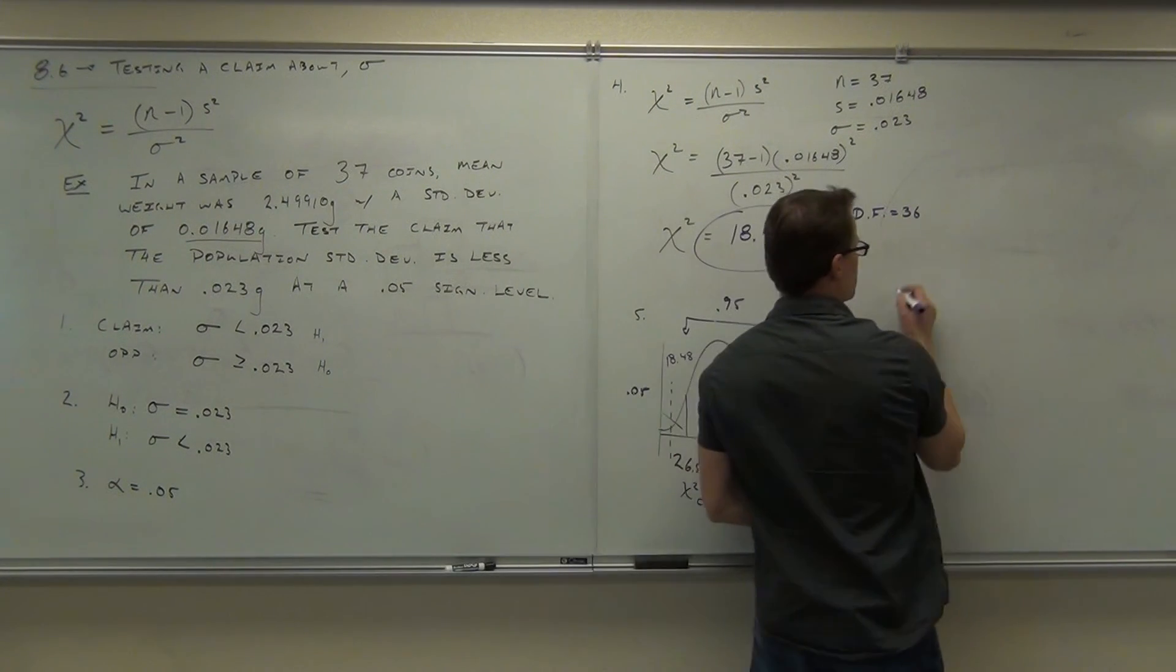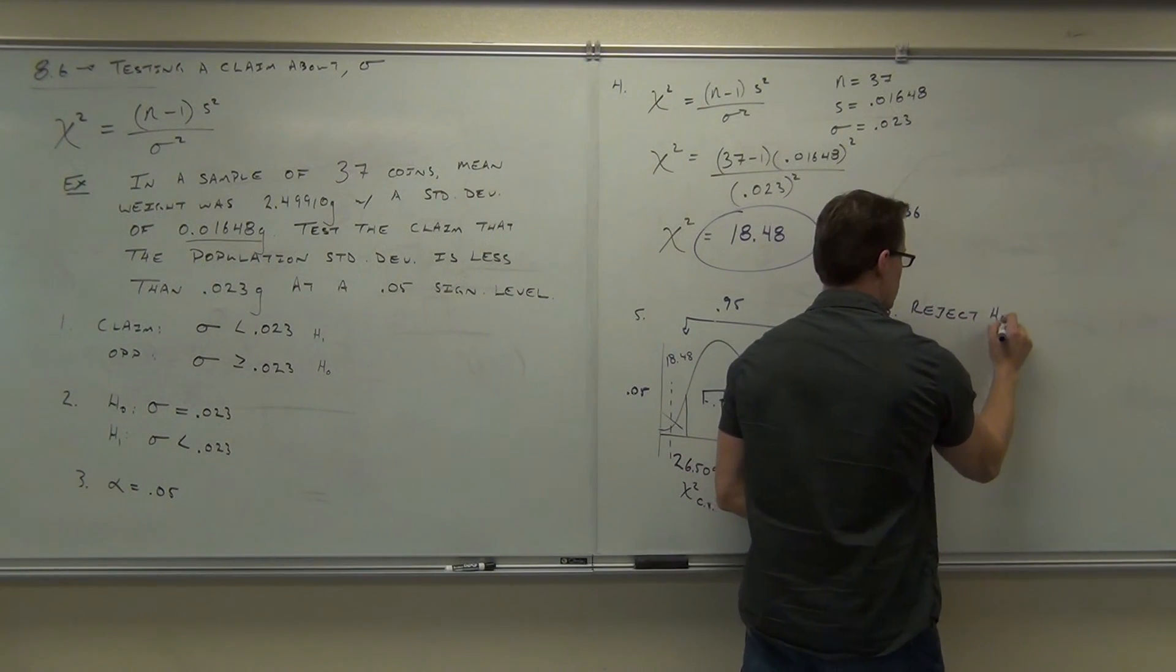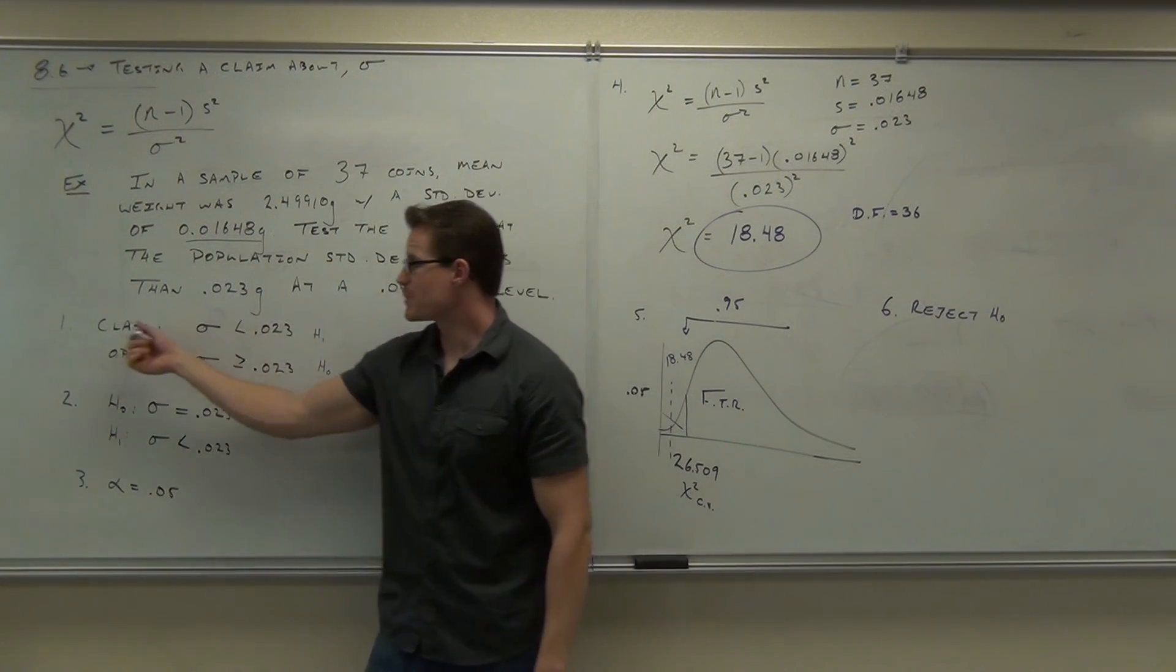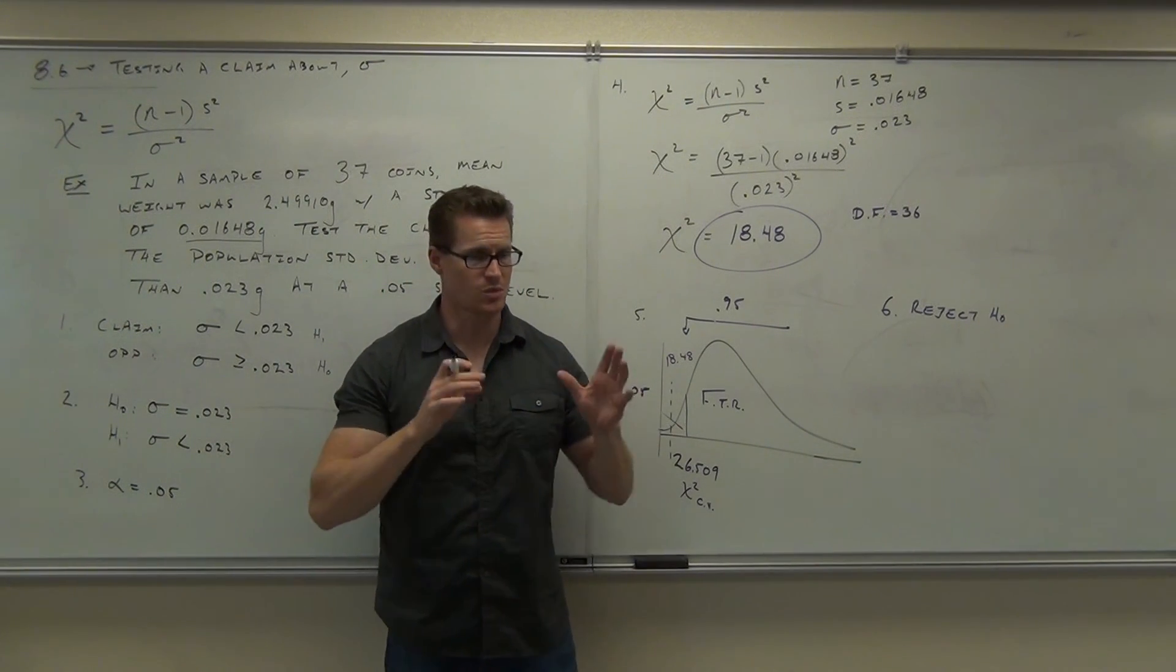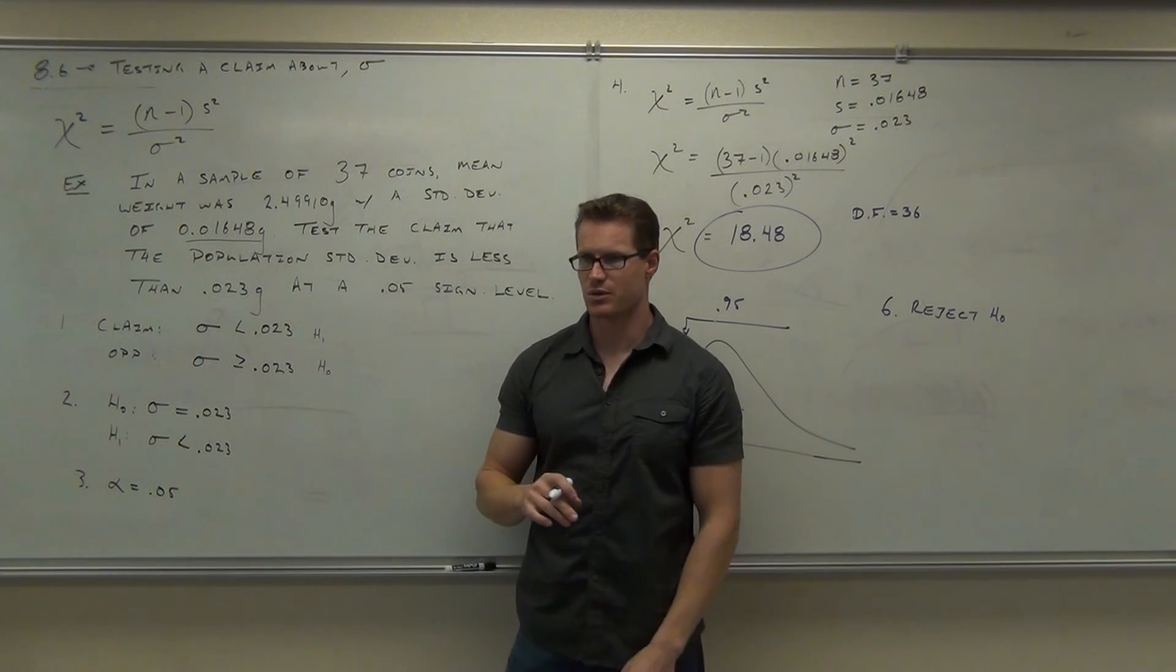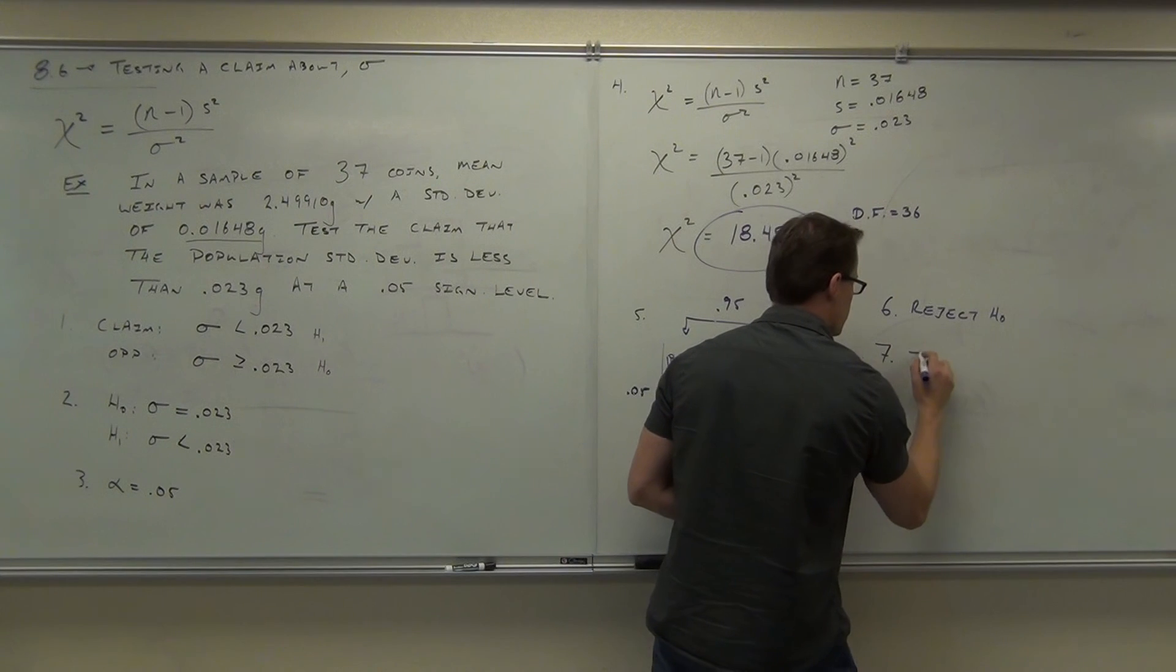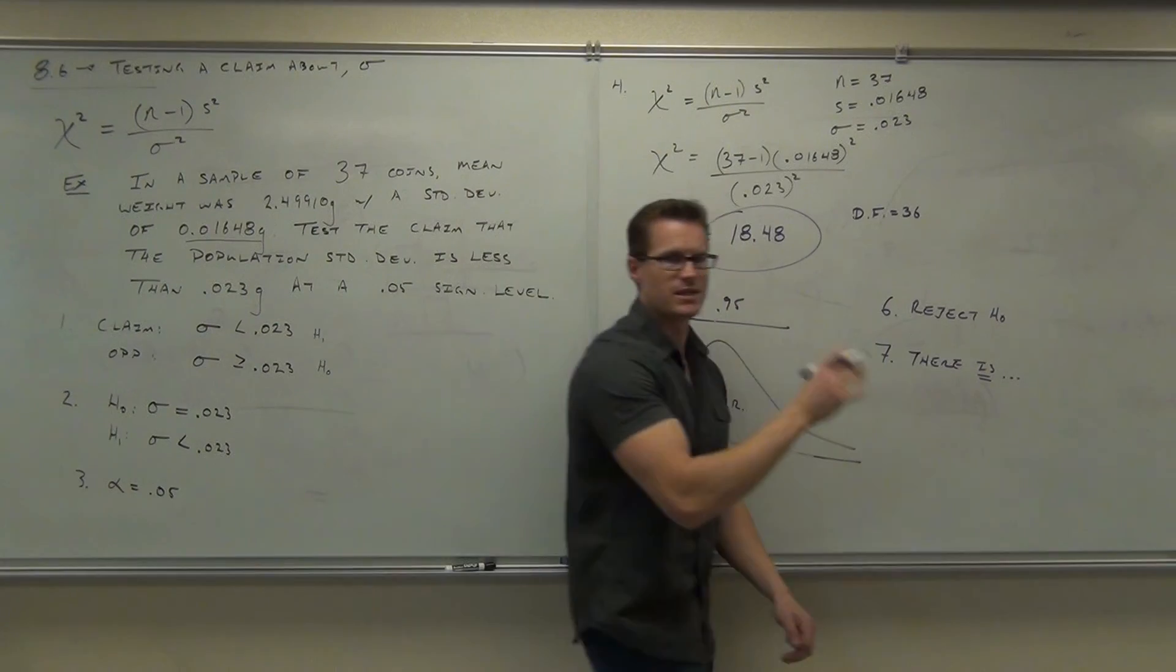So what we would do in step number six, reject H sub zero. If you reject H sub zero, you accept H sub one. You accept your claim. So right now you'd say the same thing. There is enough evidence to support the claim that our population standard deviation is less than 0.23 grams. Our pennies vary appropriately, or they don't vary too much. There is, and then you'd finish that off.